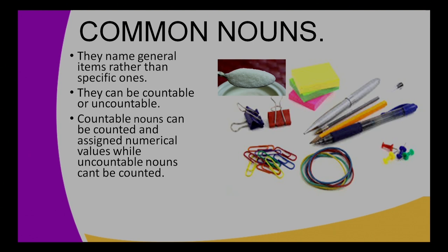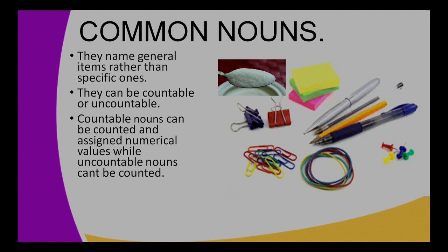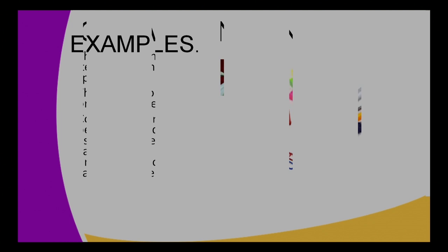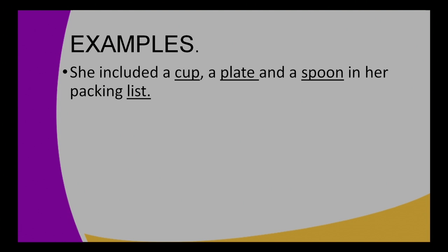Common nouns name general items rather than specific ones. They can be countable or uncountable. Countable nouns can be counted and assigned numerical values, while uncountable nouns can't be counted — these can be liquids or items that come in piles or groups such as soil, sand, and sugar. Example one: She included a cup, a plate, and a spoon in her packing list — cup, plate, and spoon are all common nouns.